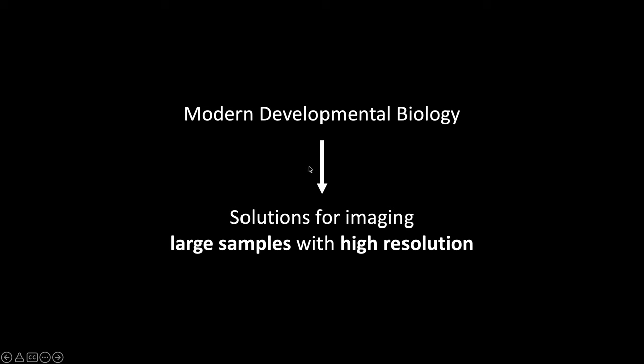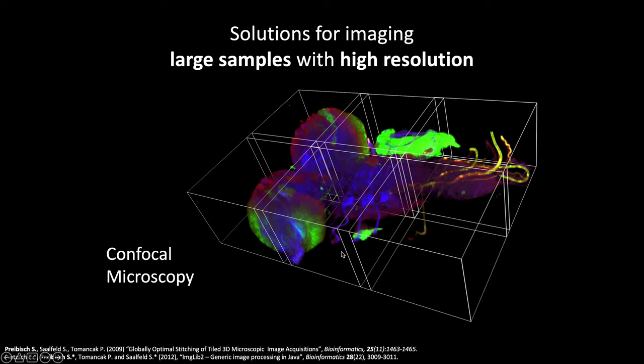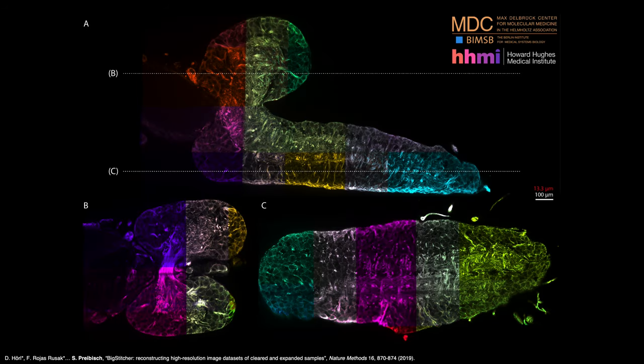Modern developmental biology increasingly relies on solutions for imaging large samples at high resolution. Back in the days this meant taking a full stack and stitching a few tiles back together. Today this means taking very large samples, expanded samples maybe even with light sheet microscopy, and stitching terabyte and newly up to petabyte sized images back together.